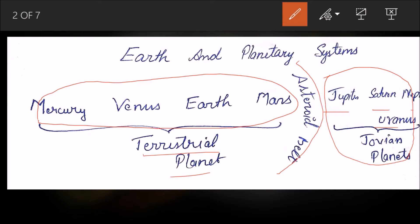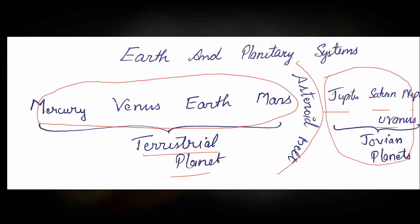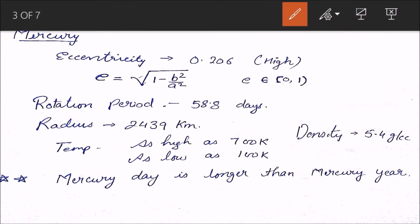First is Mercury. Mercury is the closest and smallest planet. Its eccentricity is 0.206, which is a very high value. Eccentricity is defined as e equals square root of 1 minus (b²/a²), where b and a are the minor and major axes of an ellipse. The value of e always lies between 0 and 1. When e is 1, the ellipse is almost a straight line. When e is 0, the ellipse is a circle.